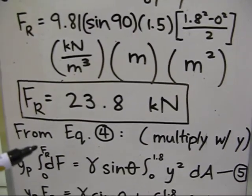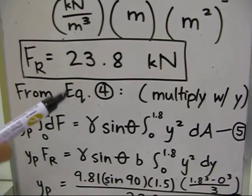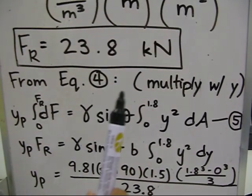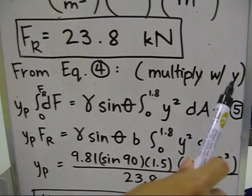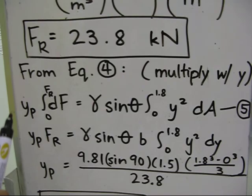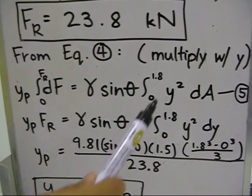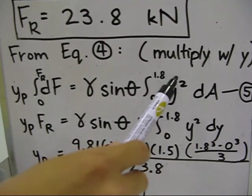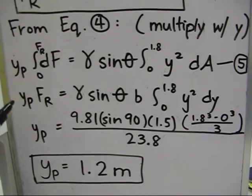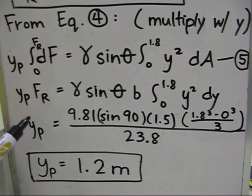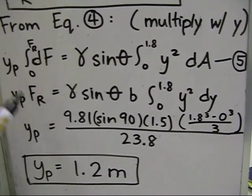To solve for the next value, which is the force's depth to the center of pressure of the material, we shall go back to equation 4, and multiply both sides with the variable Y subscript P. After integrating first the left side, we get F-R. Then, we integrate the right side of the equation, which will yield Y cubed over 3, and evaluate it from 0 to 1.8.